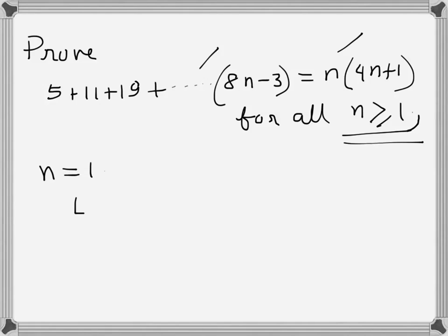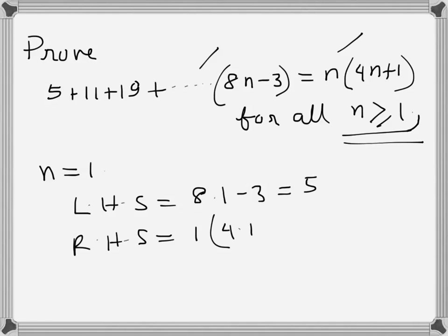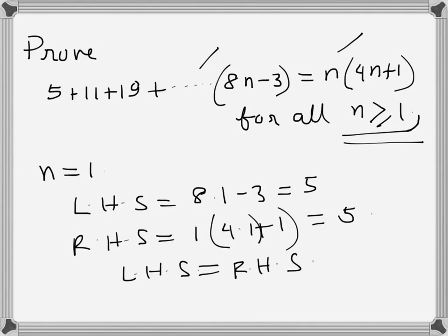When n is equal to 1, the left hand side becomes 8 times 1 minus 3, which is 5. The right hand side is 1 times (4 times 1 plus 1), which is also 5. So left hand side equals right hand side, and it is proved for n equals 1.